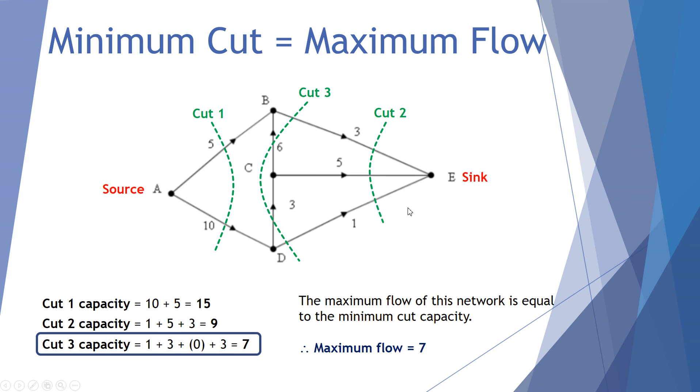So going back to our previous example. Cut 1 has a capacity of 15. Cut 2 has a capacity of 9. Cut 3 has a capacity of 7. So the minimum cut is 7. The maximum flow of this network is equal to the minimum cut capacity. So the minimum cut of 7 tells us this network, this weighted directed network, has a maximum flow of 7.